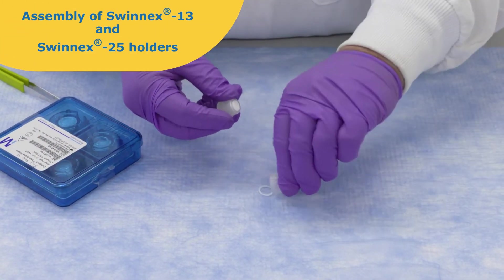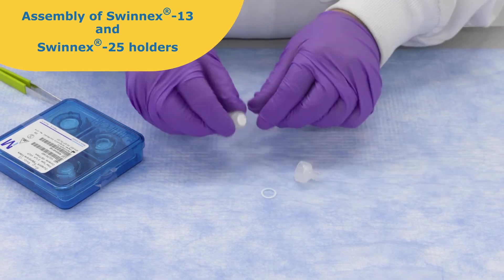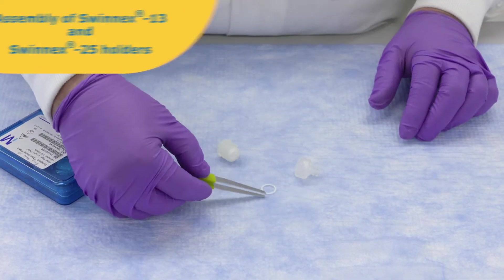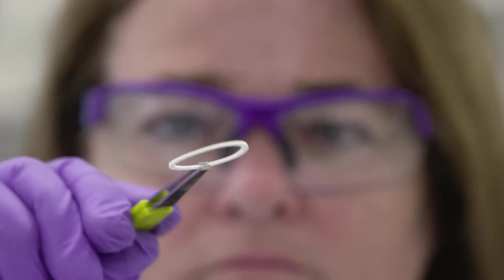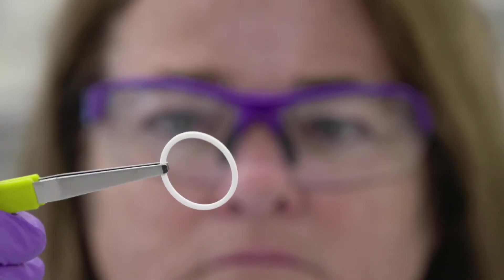First, inspect the gasket or o-rings and sealing surfaces for damage. Imperfections can cause leaks during filtration. Replace any damaged parts.